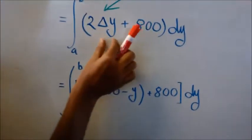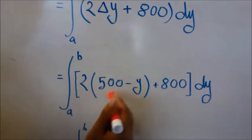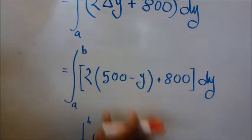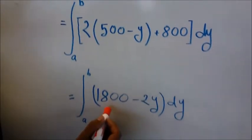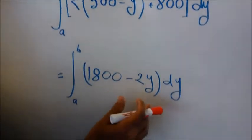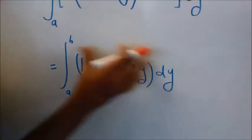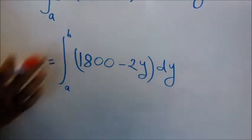From there we put the value of delta Y, which is 500 minus Y. We solve the whole thing and get 1800 minus 2Y. We're going to take the integration of this force to get the work.